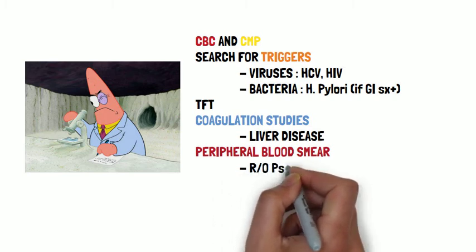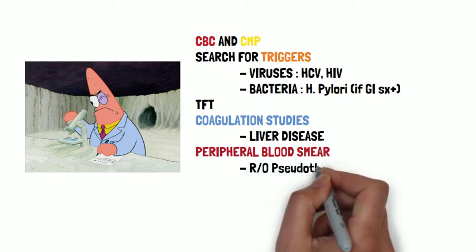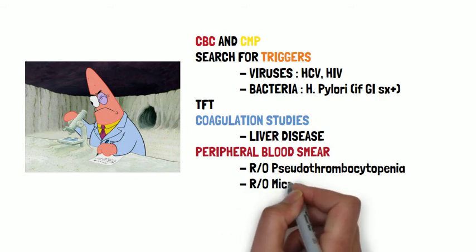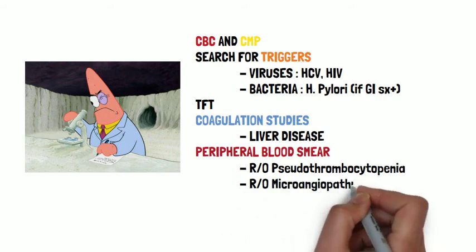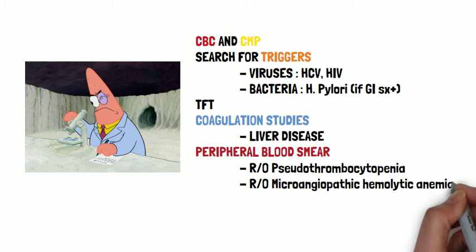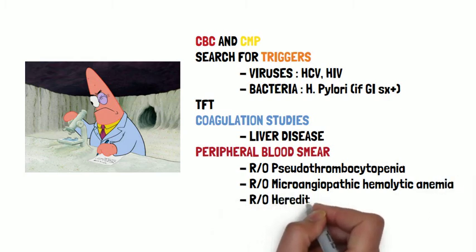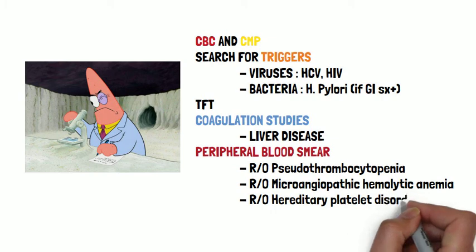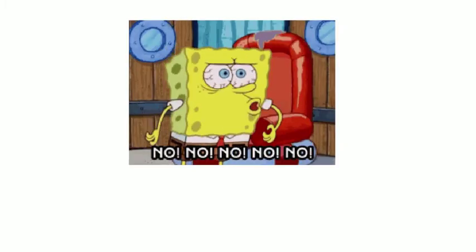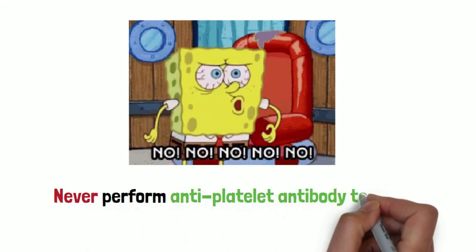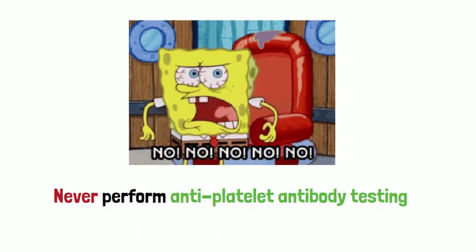In addition, coagulation studies must be performed to investigate for other causes of thrombocytopenia, for example liver disease. Peripheral blood smear should be done to exclude pseudothrombocytopenia, microangiopathic hemolytic anemia, and hereditary platelet disorders. Antiplatelet antibodies should not be tested as they are non-sensitive and non-specific.